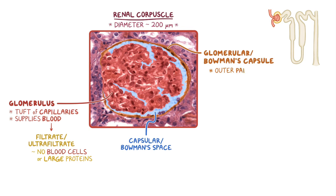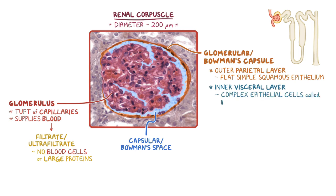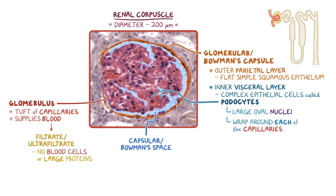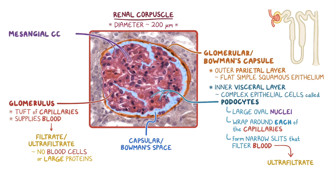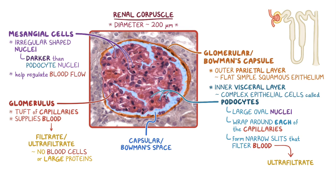The outer layer of the capsule is a parietal layer of flat simple squamous epithelium, and the inner layer is a visceral layer of complex epithelial cells called podocytes. The podocytes have prominent large oval nuclei and cell bodies that wrap around each of the capillaries, and form narrow slits between the cells that filter the blood to form the ultrafiltrate. The glomerulus also has large cells called mesangial cells that have irregularly shaped nuclei and can be difficult to distinguish from podocytes in a standard slide stained with hematoxylin and eosin, but they'll often have nuclei that look darker than podocyte nuclei. The mesangial cells have contractile properties to help regulate the amount of blood flowing to the glomerular capillaries, and are also involved in immune defense and repair of the glomerulus.